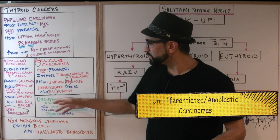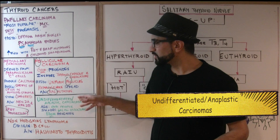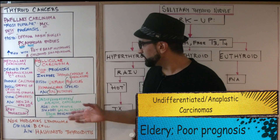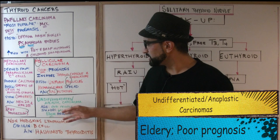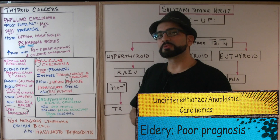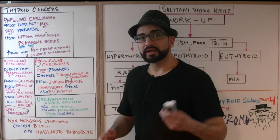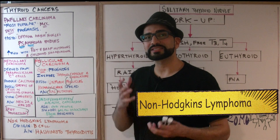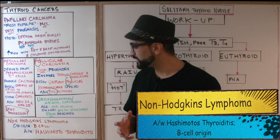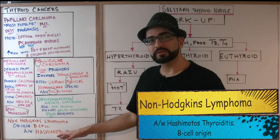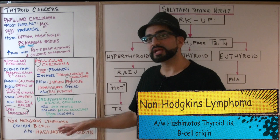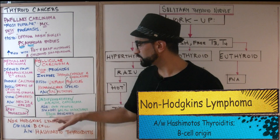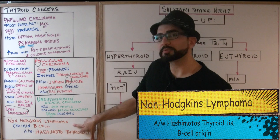Undifferentiated anaplastic carcinomas occur in patients of very old age. It invades local structures and has very poor prognosis. Lastly, non-Hodgkin's lymphoma has a B-cell origin. If you remember from a couple of videos ago when we talked about Hashimoto's thyroiditis, there is an increased risk of developing non-Hodgkin's lymphoma — definitely remember that connection.